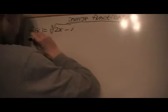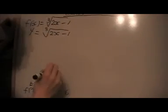Now let's have a look at the other one. f of x equals the cube root of 2x minus 1. We'll replace that by y.